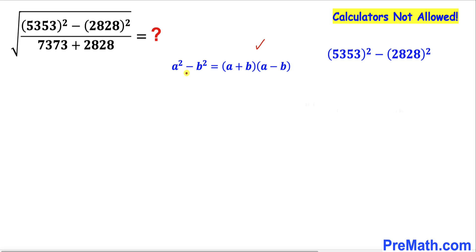Here I have copied it down. Now let's recall this famous identity: the difference of two squares, a² - b² = (a + b)(a - b). We are going to apply it here. Therefore, this is going to become (5353 + 2828) times (5353 - 2828).